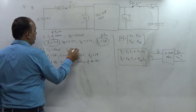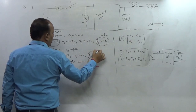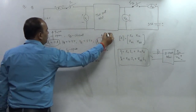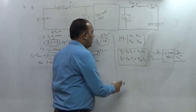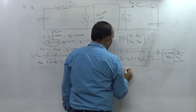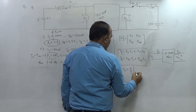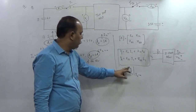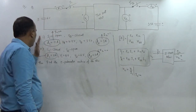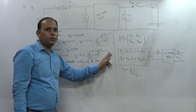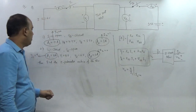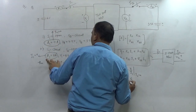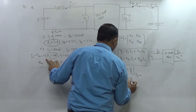Now, analyzing the equations: Z11 = V1/I1 when I2 = 0. The condition I2 = 0 corresponds to S2 open. In that case, V1 = 6 V and I1 = 4 A. Therefore, Z11 = 6/4 = 1.5 Ω.